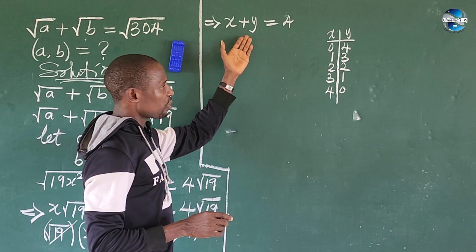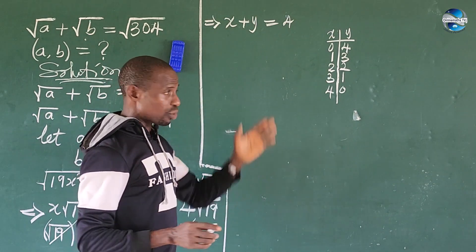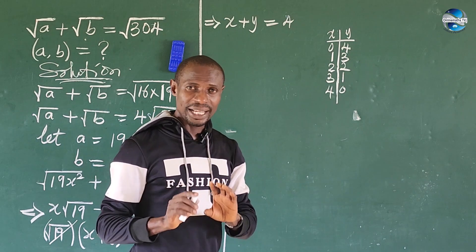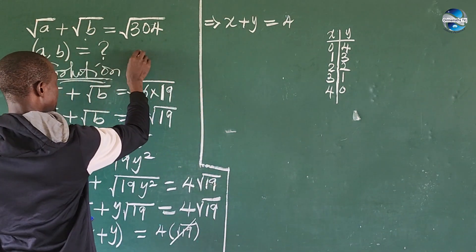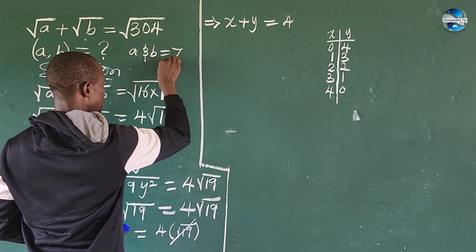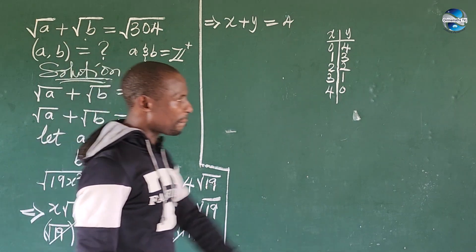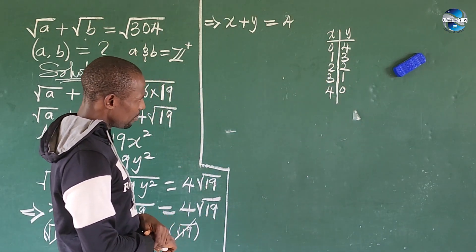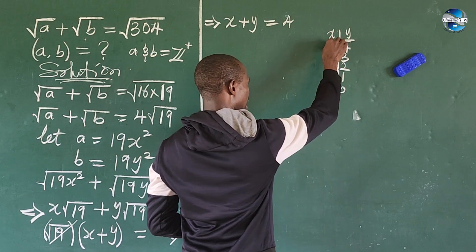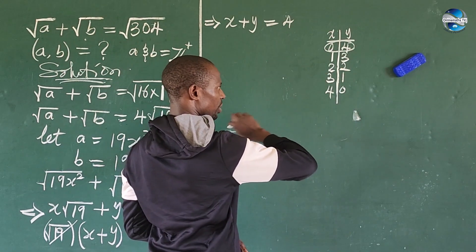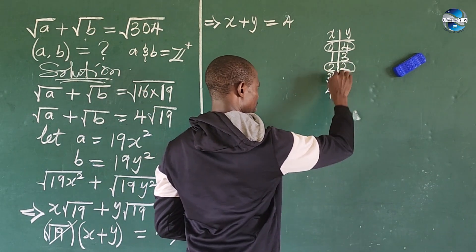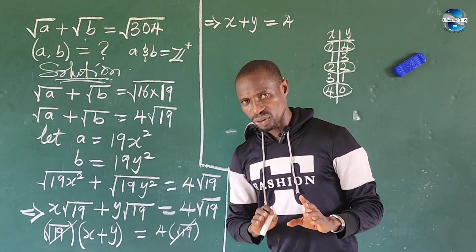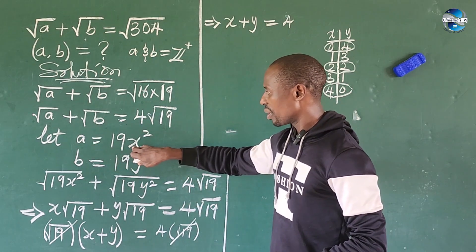There are other scenarios where x plus y equals 4 using negatives, but since we are asked to find positive integers for a and b, we narrow our solving within that domain. We discover that the valid positive-integer pairs for (x, y) are the ones listed, and substituting them back into the original equation will work out.